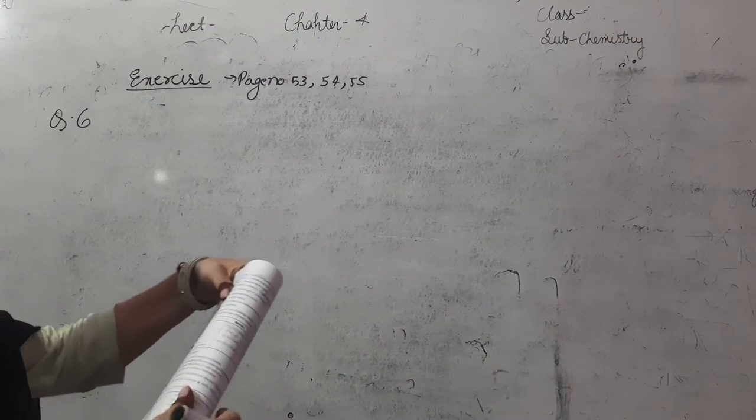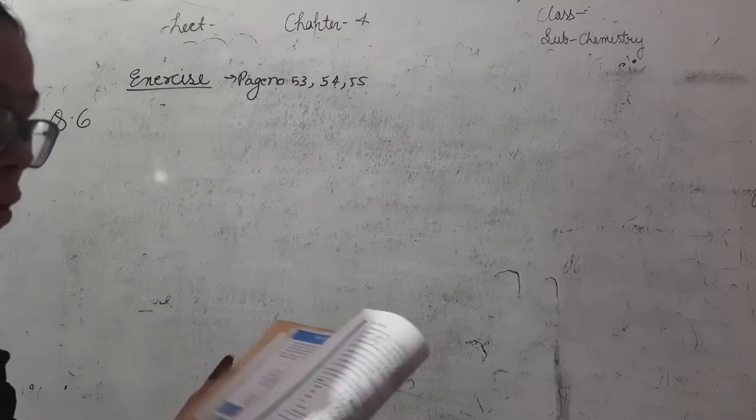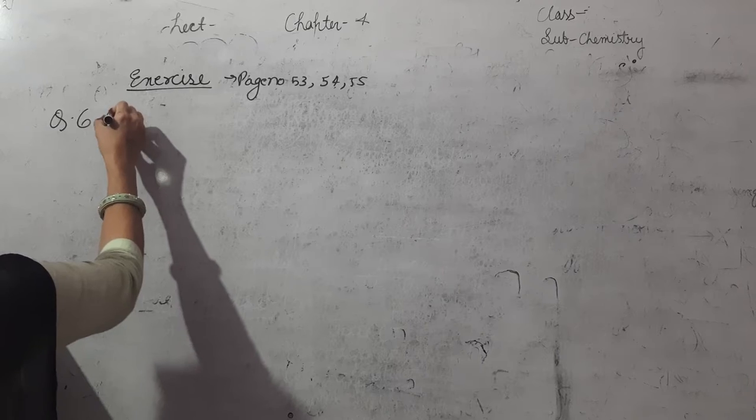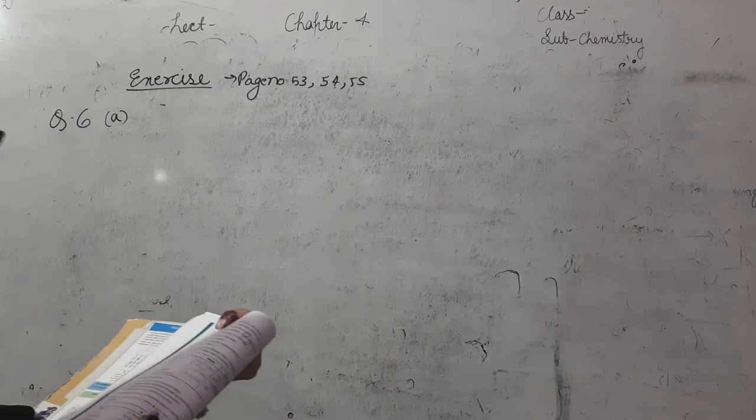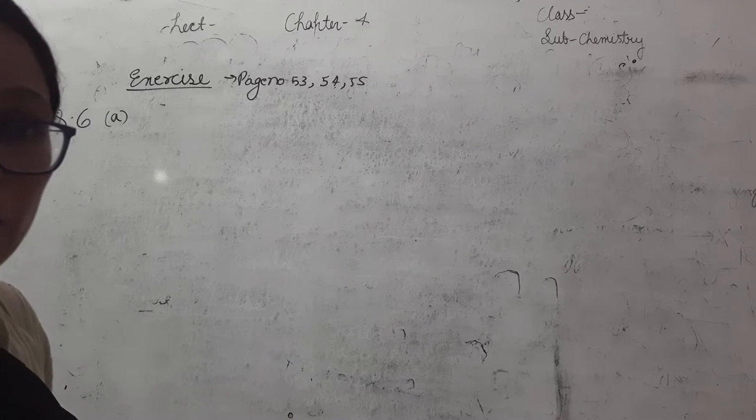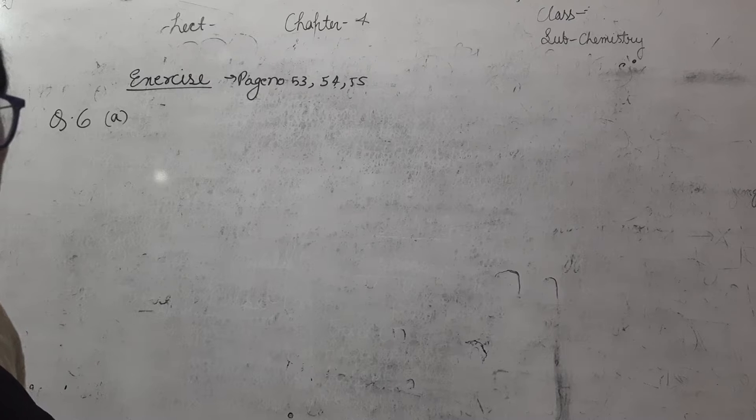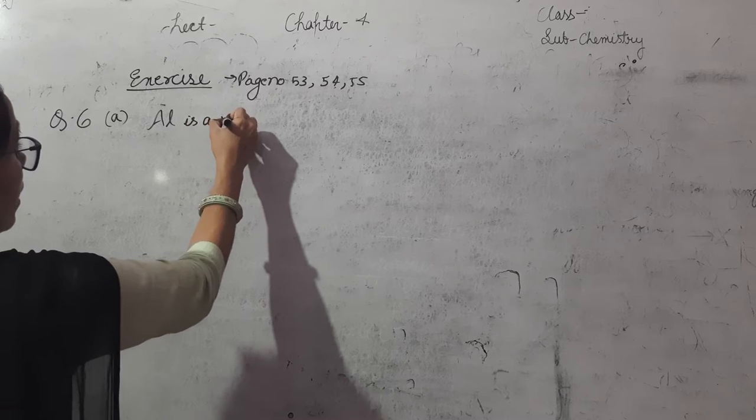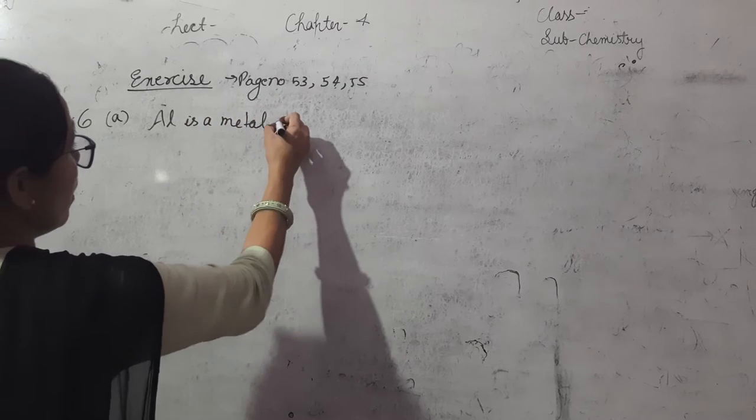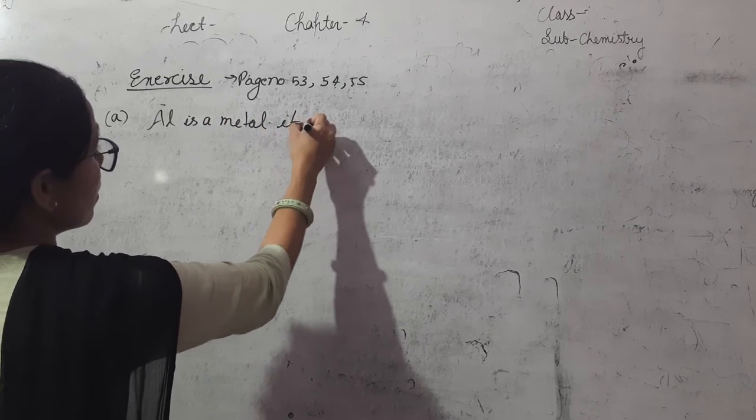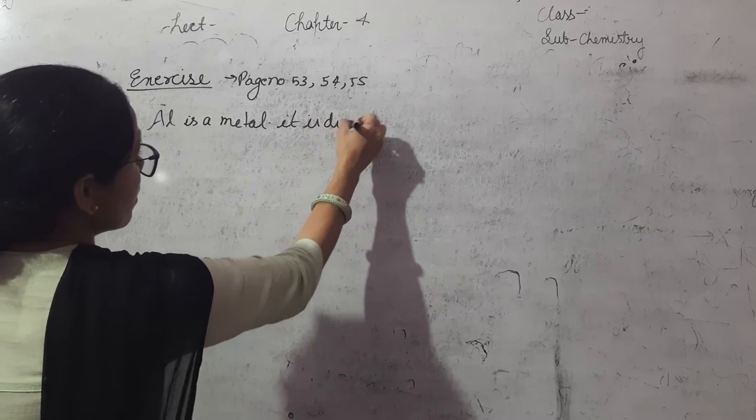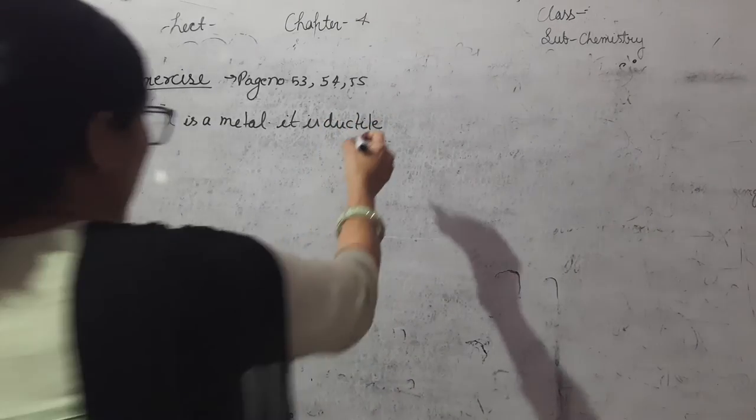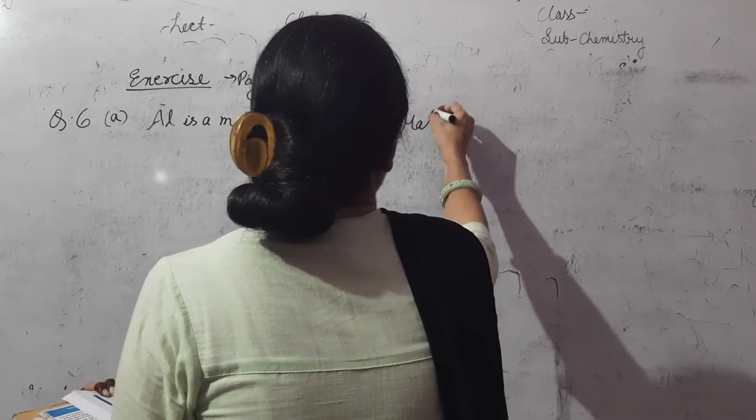Question number 6 is give reason for the following. The first one is A: Aluminum foils are used to wrap food items. Aluminum is a metal. It is ductile and malleable.